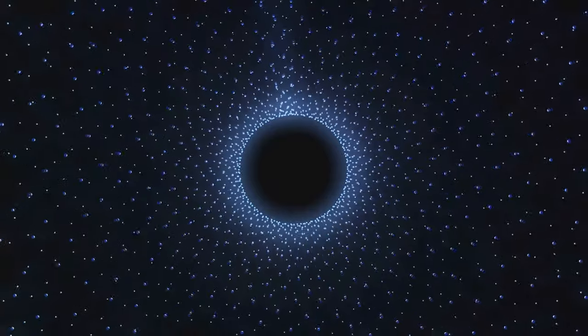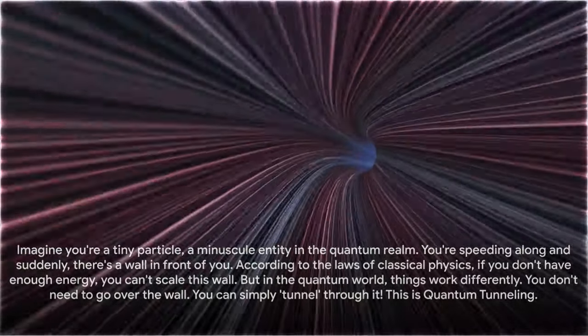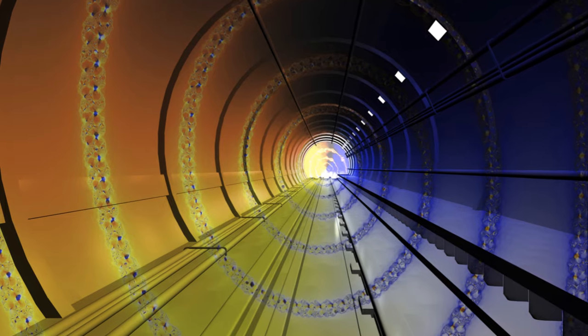In quantum tunneling, particles like electrons, or even atoms, have a probability to tunnel through potential barriers, even when they apparently lack the energy to do so. This is not because they gain energy somehow, but because their quantum state, described by their wave function, exists in a superposition of different positions. This means there's a possibility for the particle to be on the other side of the barrier.